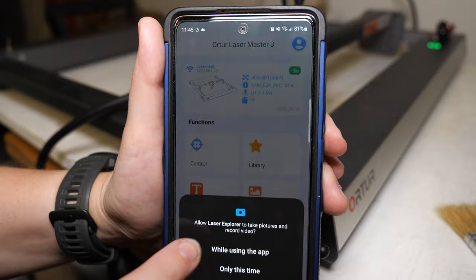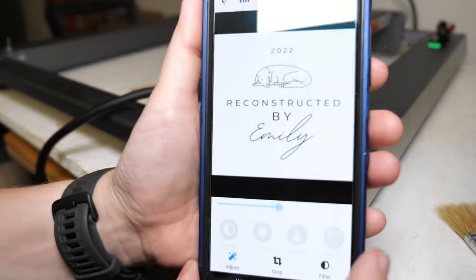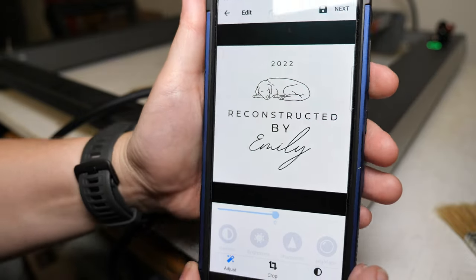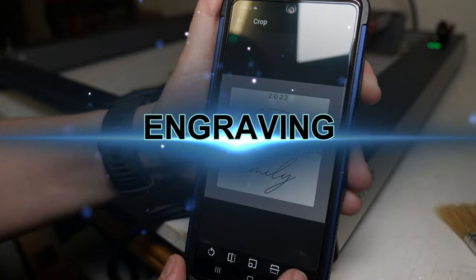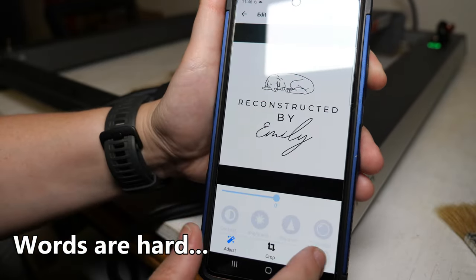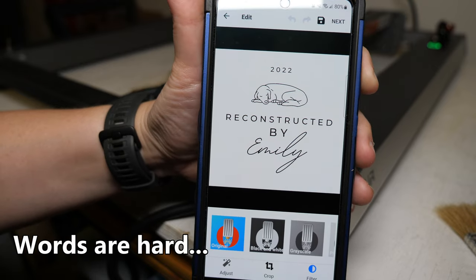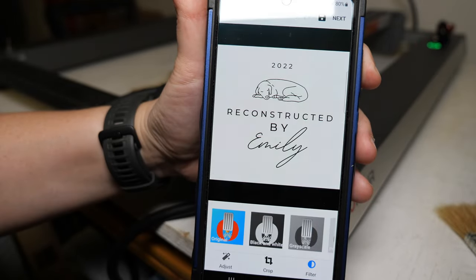It also allows you to select images from your phone, which brings me to one of the first and most common sense uses for this laser, which is engraving. For this example, I'm going to use some 3mm basswood, and I've created a logo that I want to engrave using a program called Canva, which I'll link below.